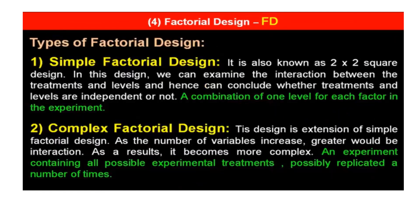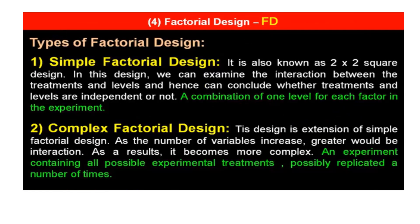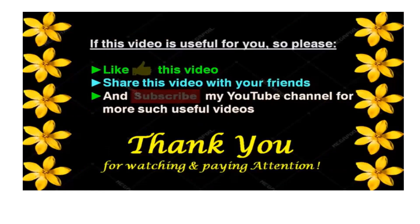The types of factorial design: factorial design is of two types — simple factorial design and complex factorial design. Simple factorial design is also known as two-by-two square design. This design can examine the interaction between treatments and levels and hence can conclude whether the treatments and levels are independent or not. Complex factorial design is the extension of simple factorial design — as the number of variables increases, greater would be the interaction, making it more complex. So these were the types of formal experimental design.